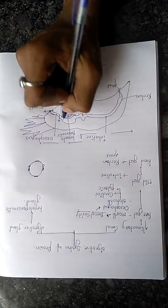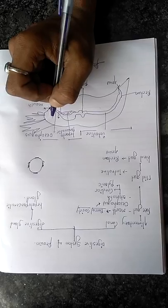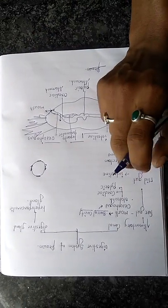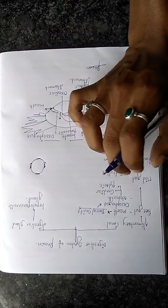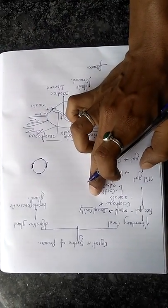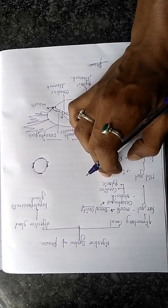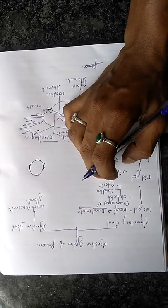The esophagus leads to the cardiac stomach. Two types of stomach are present: one is the cardiac stomach and the second is the pyloric stomach.